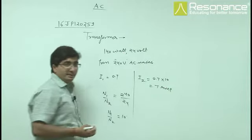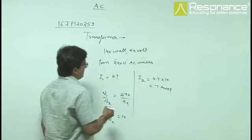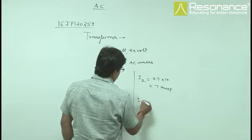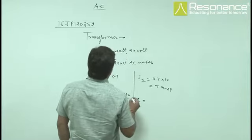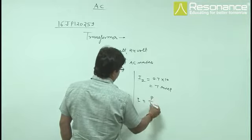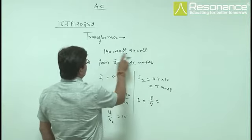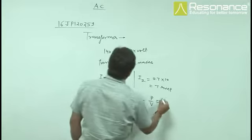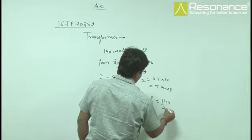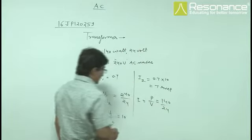But from given data, we can find the current. So current equals to P by V, 140 watt and 24 volt. So 140 by 24 is the current. So what is the efficiency?